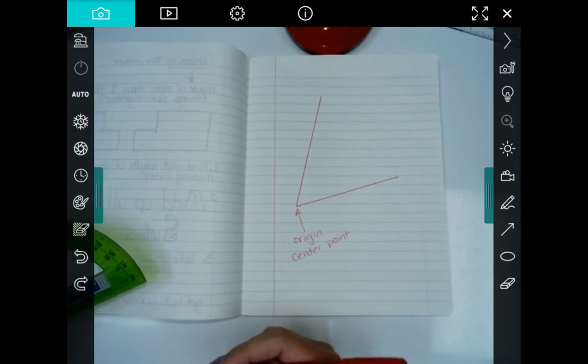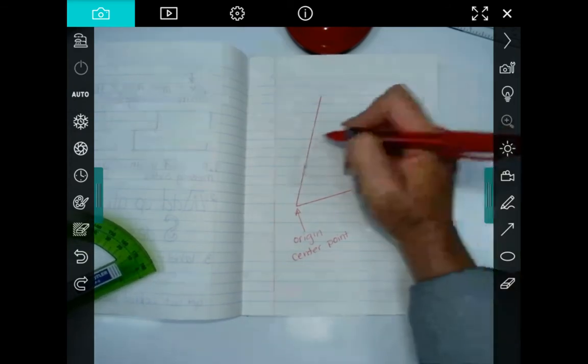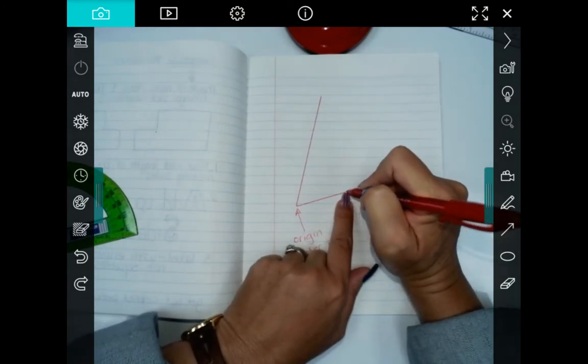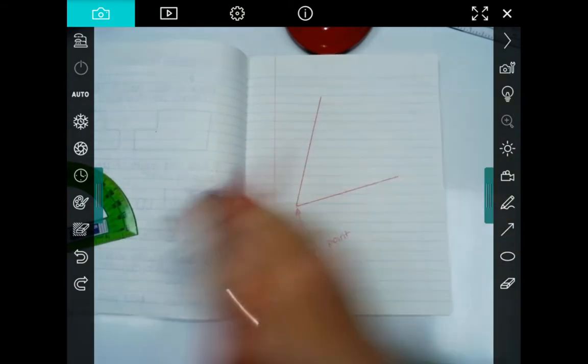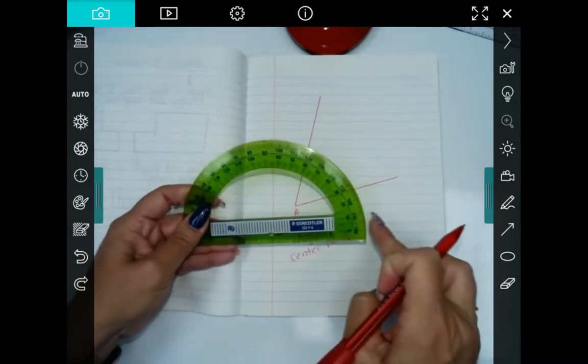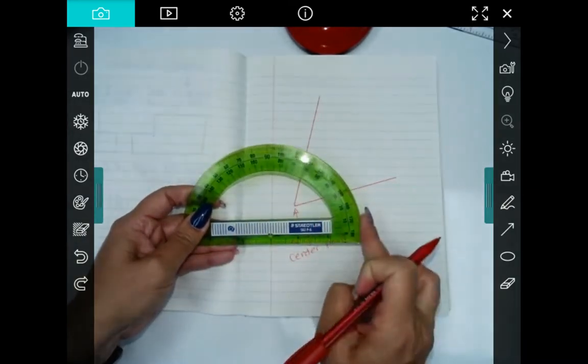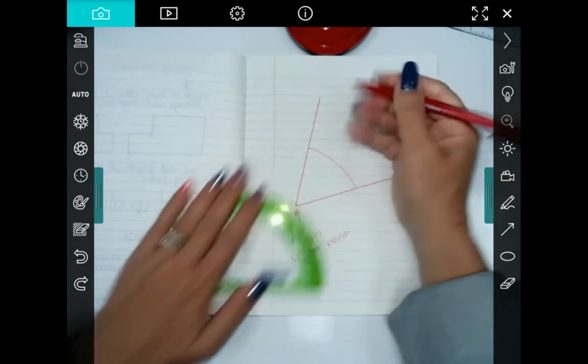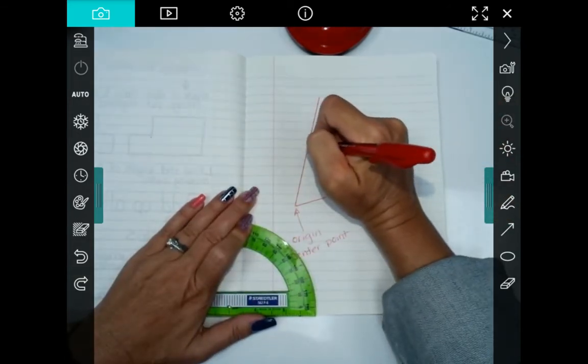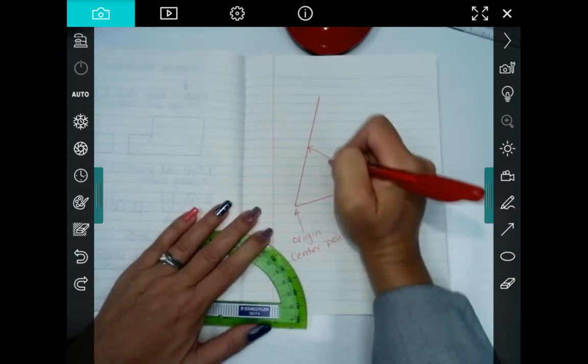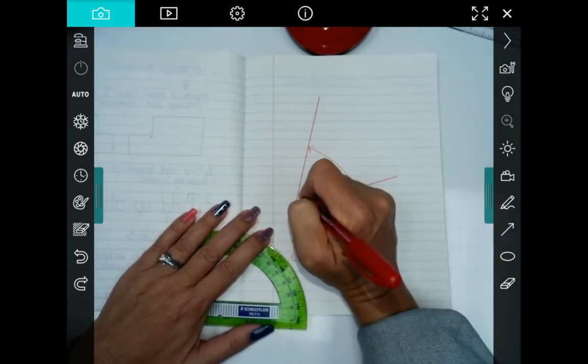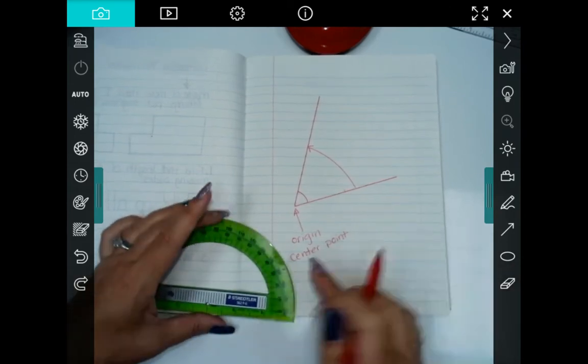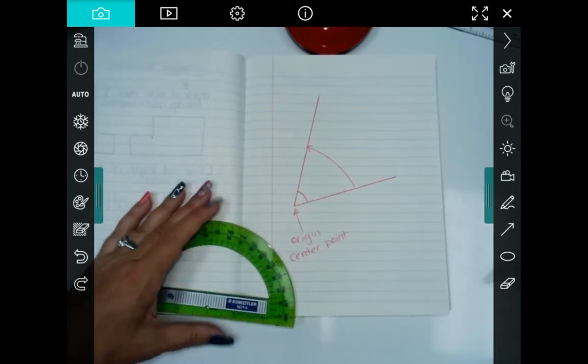When you're measuring an angle, you measure from the first ray to the second ray. And if you notice, my protractor is round, because we measure this distance here. That's how we know what the distance of this angle is. It's the same distance. Okay, that's why it's a circle.